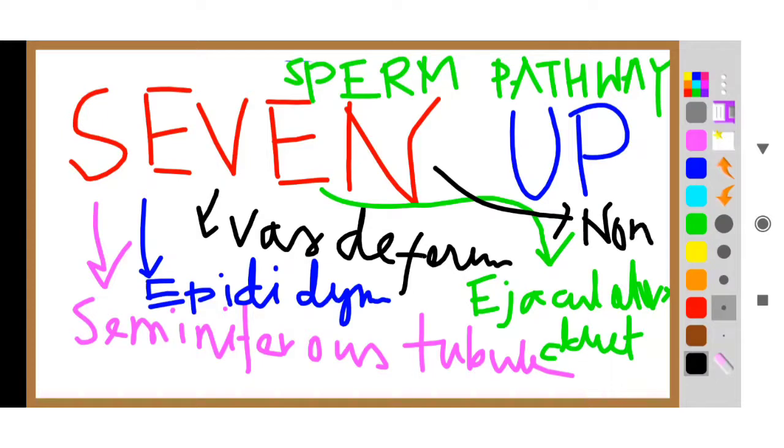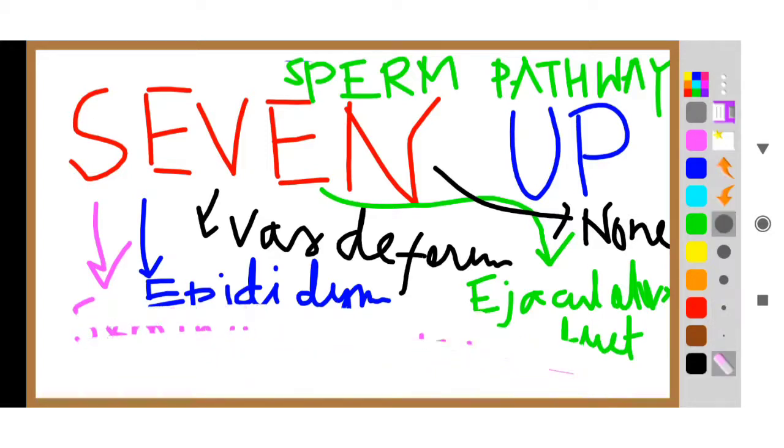So 7, the full form of 7: S means seminiferous tubule, E means epididymis, V means vas deferens, E means ejaculatory duct, and N means none. So all these are seven. Now let me erase this portion for you and let us go to the last part of the video.